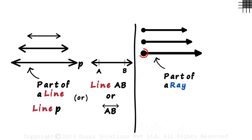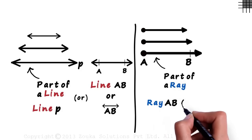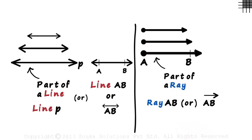We can mark this point as A and mark a point B somewhere on the ray. We can call this ray AB or write AB with a tiny ray over it. This tells us that the ray starts at point A and goes indefinitely in one direction.